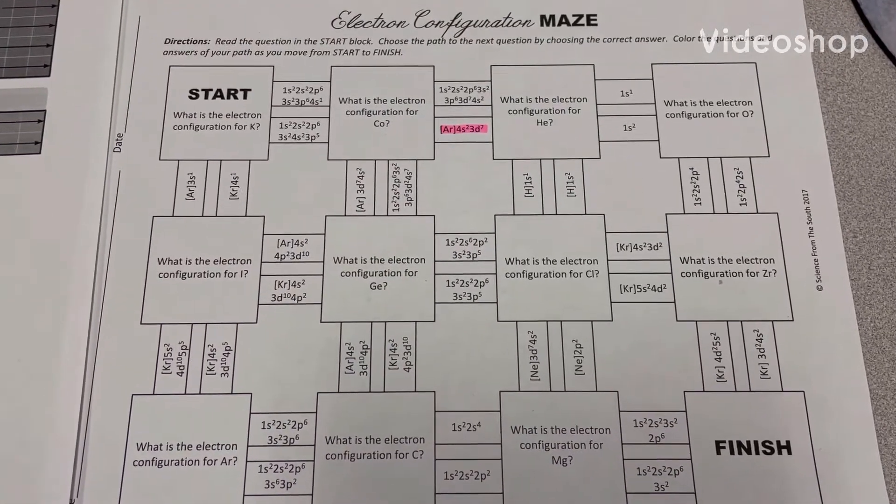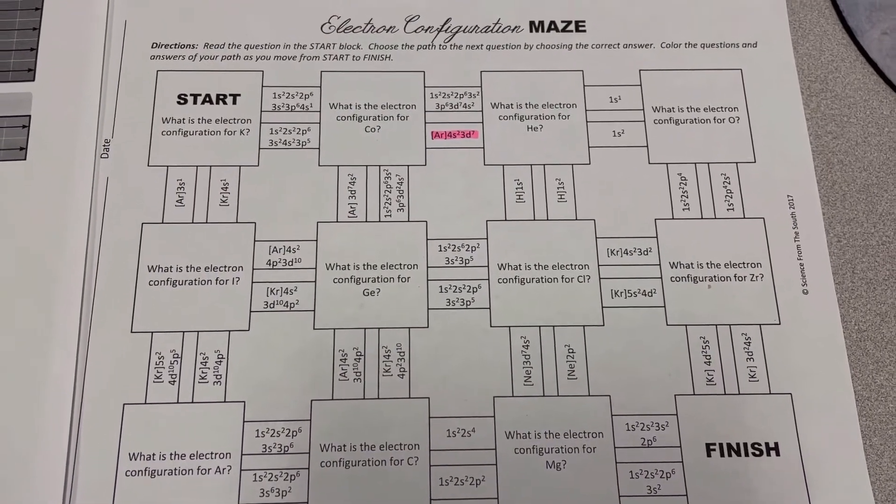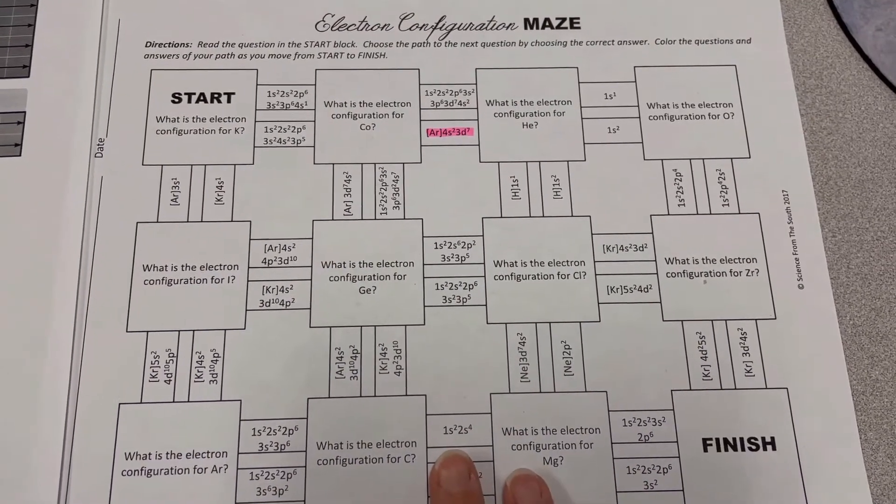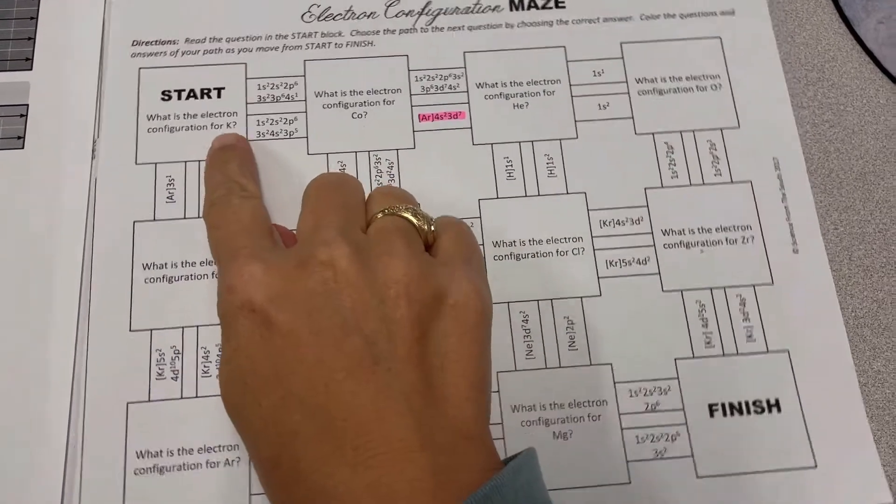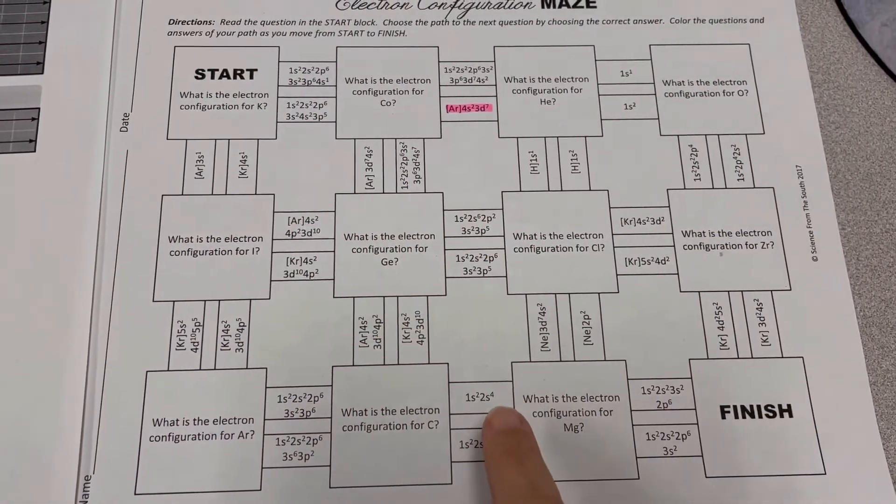Alright guys, I am going to try to help you understand a little bit more about electron configurations. So you have this maze today and we see that we have a starting point, we have a finishing point, and we've got boxes along the way we have to navigate.